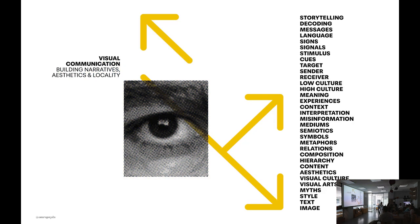I'm going to talk about visual communication in general. Some words that I link to visual communication — the first thing I have in my mind is storytelling. Visual communication has to do with a story, the building of a narrative. It's about building a message or using language, signs, signals, stimulus and cues to create a message. It's very important to understand that there's always a sender and a receiver — someone who sends the message and the group that receives it, our target group.